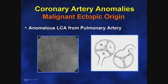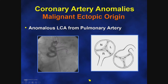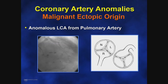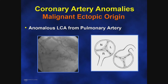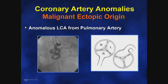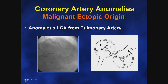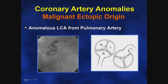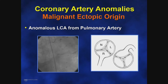In ALCAPA, the left coronary artery comes up from the pulmonary artery. When you perform cardiac catheterization, you inject the right coronary artery — which will be dilated — and you see reversal of flow in the left coronary system, creating a left-to-right shunt that empties into the pulmonary artery. These patients depend predominantly on the right coronary artery circulation to supply the whole myocardium, and can develop ischemia with myocardial infarction, ischemic mitral regurgitation, ventricular tachycardia, or sudden death.